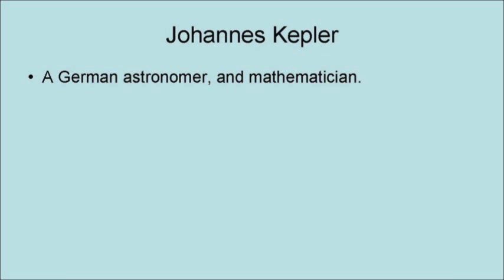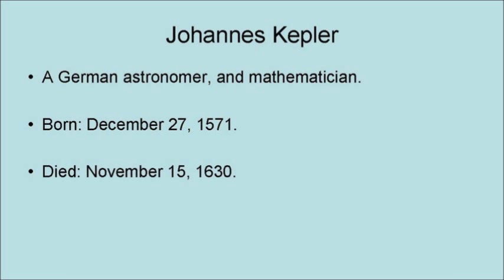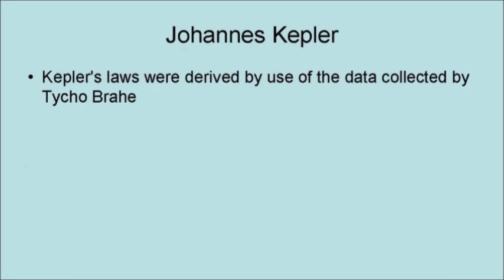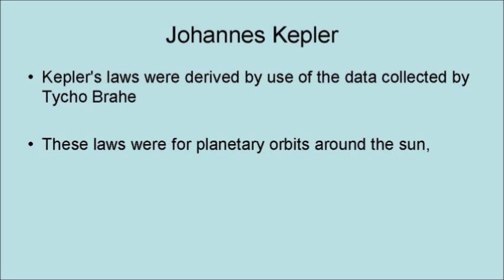Johannes Kepler was a German astronomer and mathematician. Kepler was born on December 27, 1571, and he died on November 15, 1630. He is best known for his laws of planetary motion. Kepler's laws were derived by the use of the data collected by Tycho Brahe. These laws were for planetary motion around the sun.